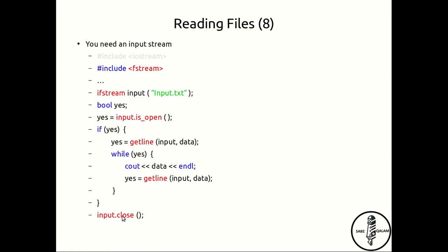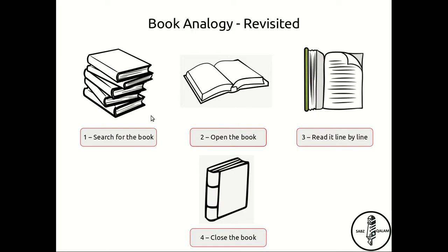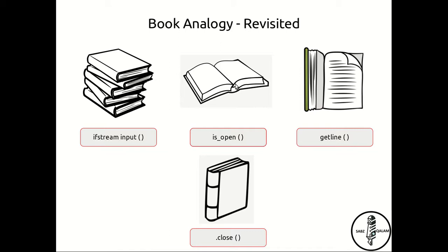So this is the whole program for reading a particular file. Going back to the book analogy: search for a book, open it, read it line by line, and close it. We are doing pretty much the same steps using our file stream. You create an ifstream instance with the filename — which searches for the file — always check if it's open, read it line by line using getline, and close the file when done.